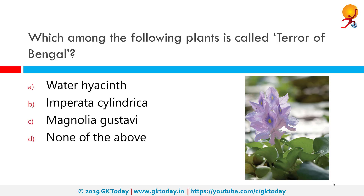Which among the following plants is called Terror of Bengal? The correct answer is Water Hyacinth. Water Hyacinth is a free-floating perennial aquatic plant native to tropical and subtropical South America. With broad thick glossy ovate leaves, Water Hyacinth may rise above the surface of water as much as one meter in height. Since these plants float, it makes water bodies look like land.